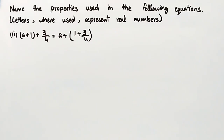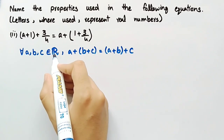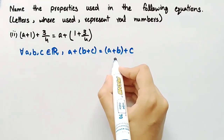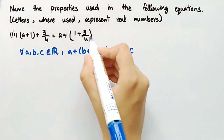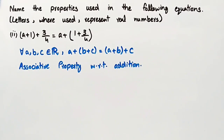The second equation is A plus 1 plus 3/4 is equal to A plus 1 plus 3/4. According to the associative law of addition, for all A, B, C belonging to the set of real numbers, A plus (B plus C) is equal to (A plus B) plus C. The property used in this equation is the associative property with respect to addition.